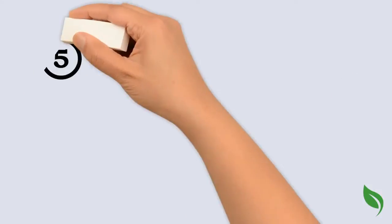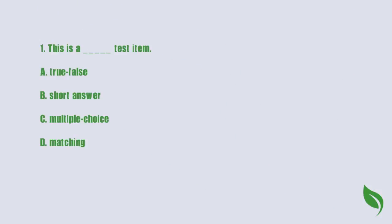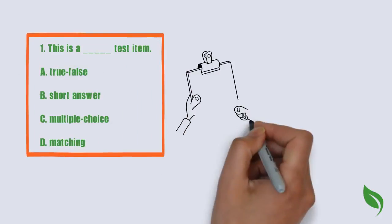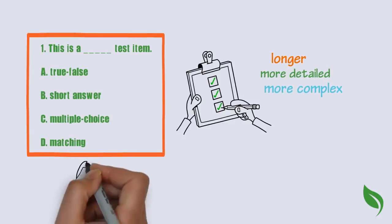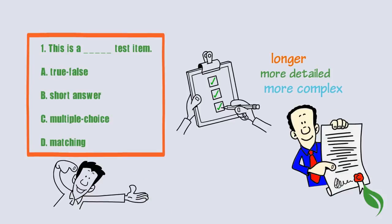Number five. Keep the alternatives a consistent length and format within the same test item. Generally, we have a tendency to make the correct answer longer, more detailed, and more complex than the other alternatives. Test takers pick up on this and tend to select those longer alternatives as a result.